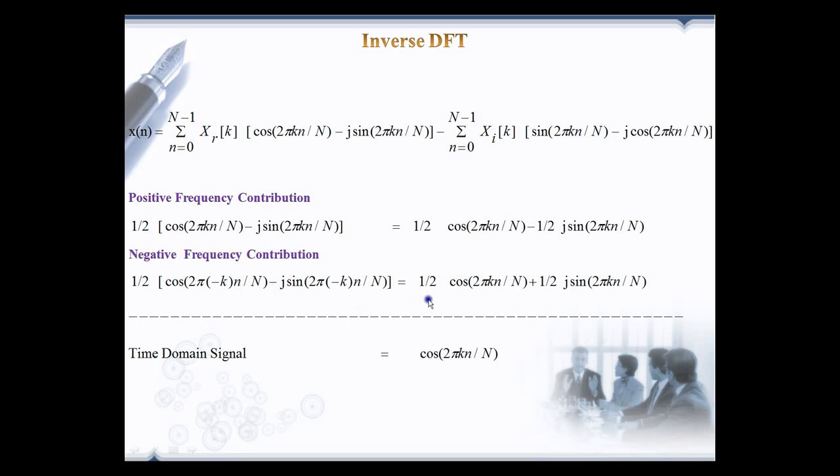Then by adding positive and negative frequency contribution we get back the original time domain signal. Here this term will cancel and adding this we get the original time domain signal cos(2 pi k n / N). This is how the inverse DFT works on frequency domain complex values to retrieve the time domain signal by cancelling the imaginary components.